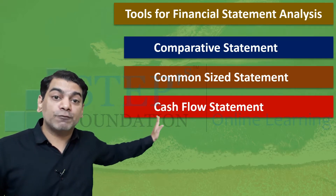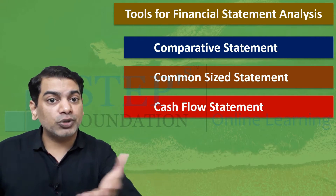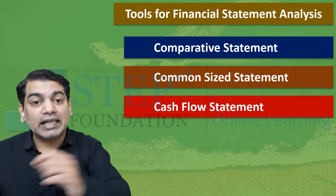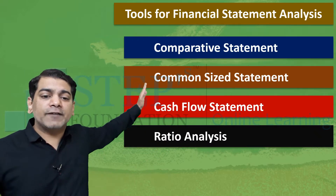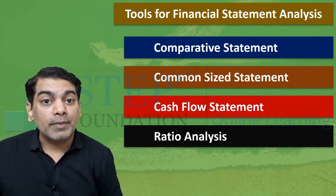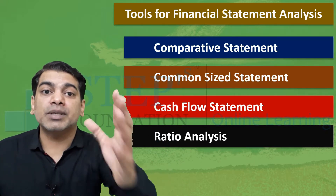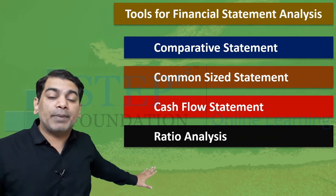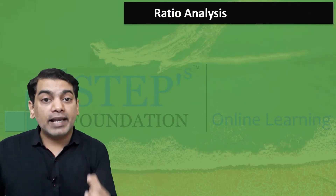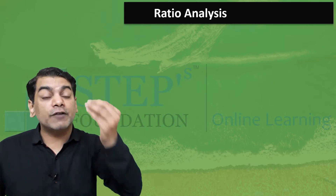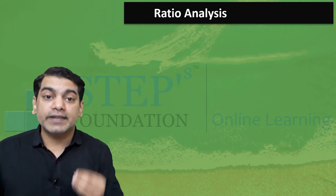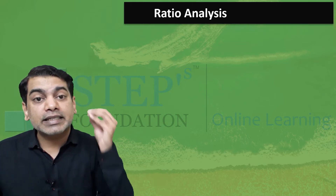Comparative statement, common-size statement, and cash flow statement — these are nothing but your final accounts statements: trading account and profit and loss account, which you can convert into these formats. Together we also learn ratio analysis. Ratio analysis is different, but for comparative statement, common-size statement, and cash flow statement, we have to make a format and solve. For ratio analysis, there are three categories of formulas given in our syllabus — we have only three categories of limited formulas.